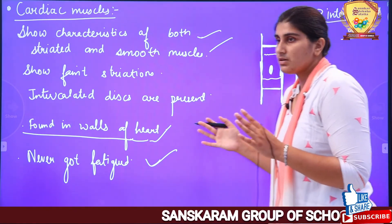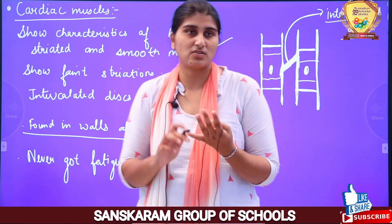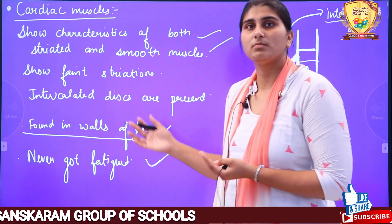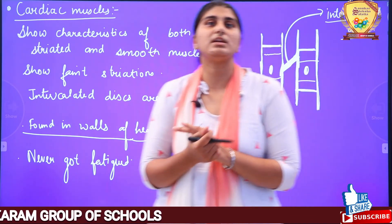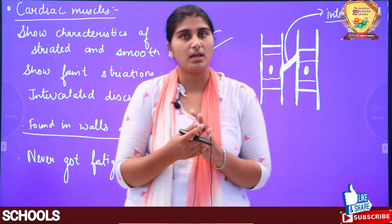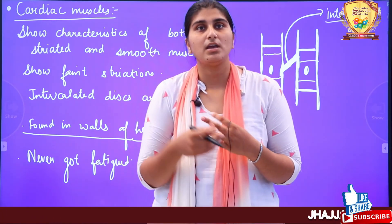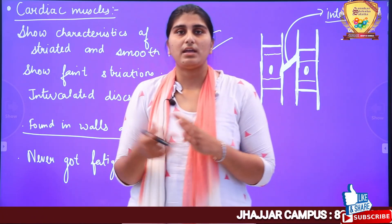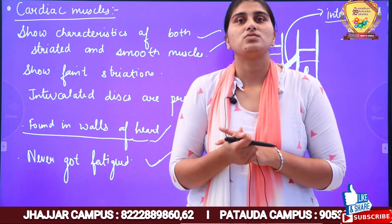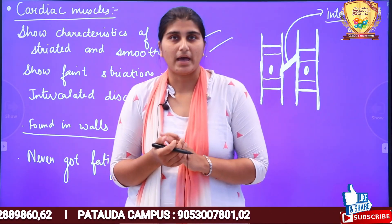So this is all about muscular tissue. Today in class we studied the structure of skin, and we studied muscular tissue — three types of muscles: striated muscles, smooth muscles, and cardiac muscles. You should know the location of each, and whether they are voluntary or involuntary.